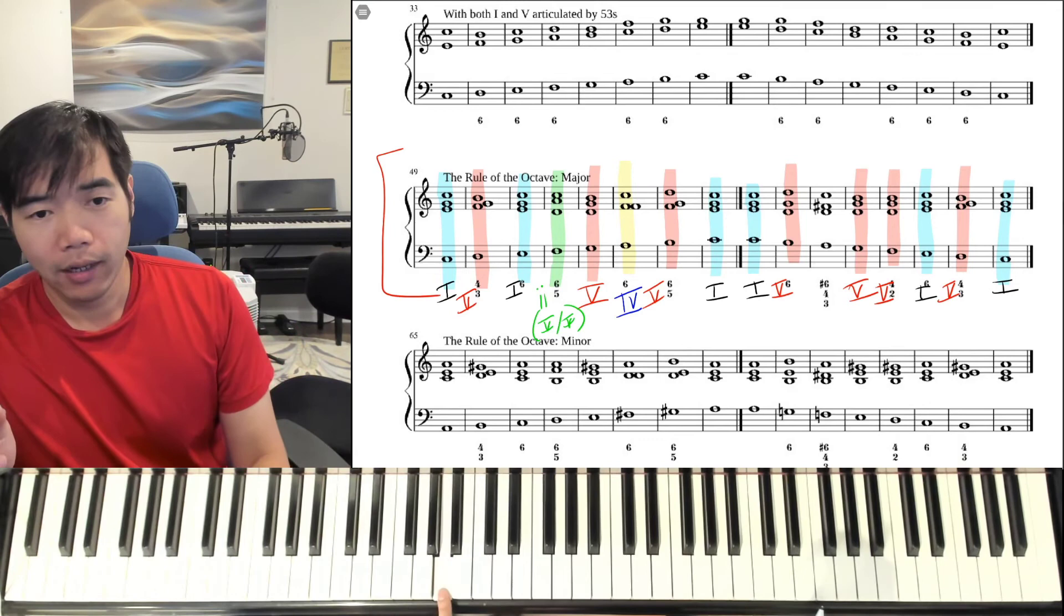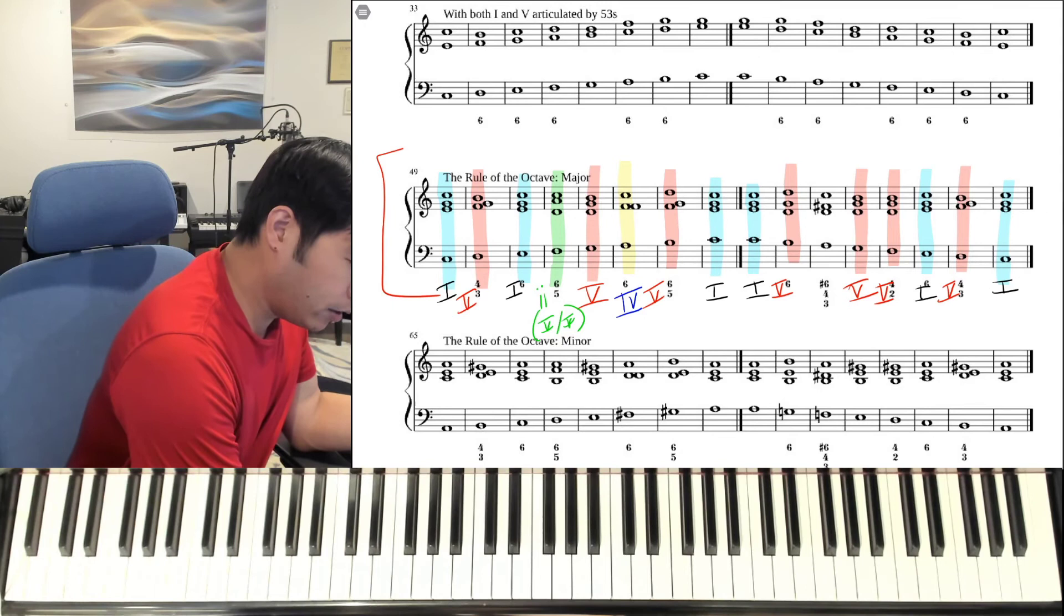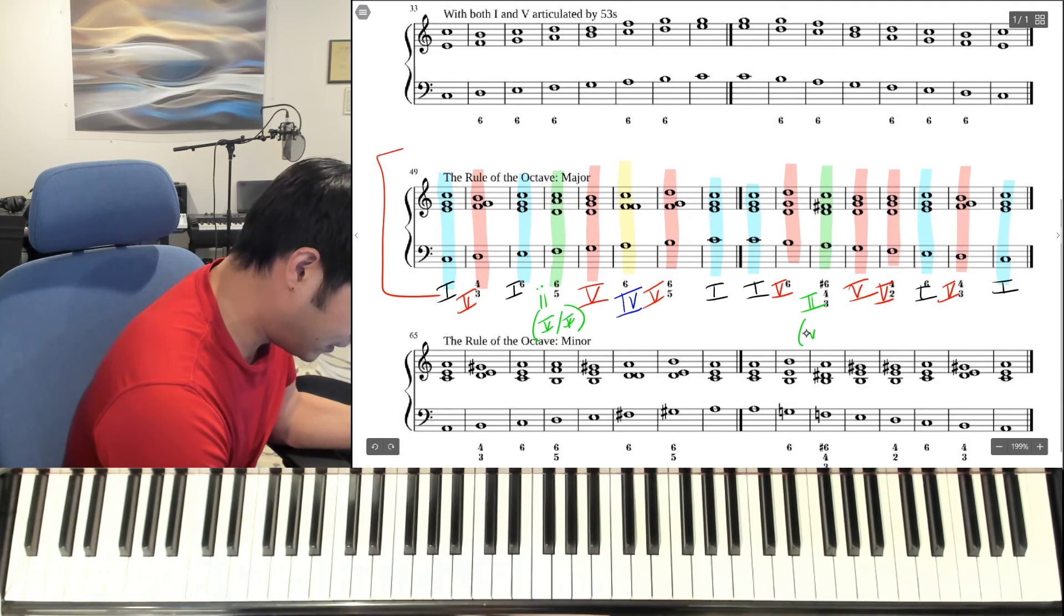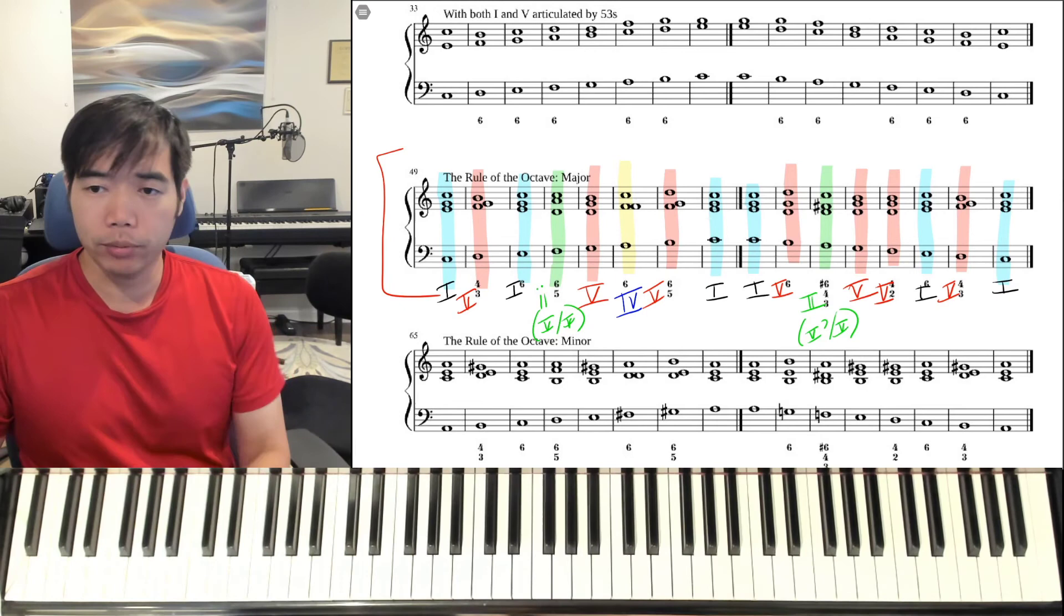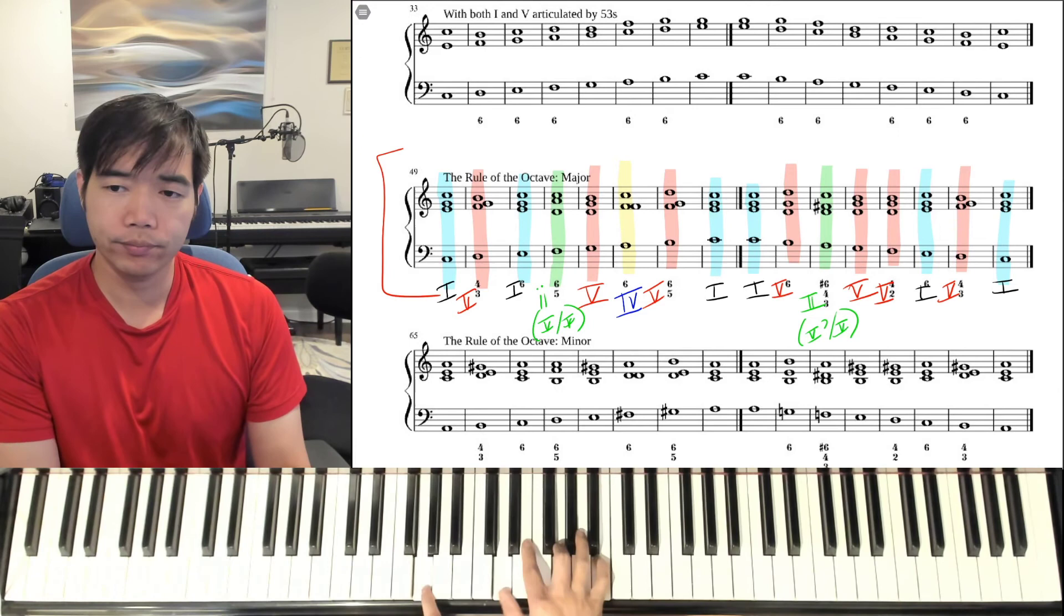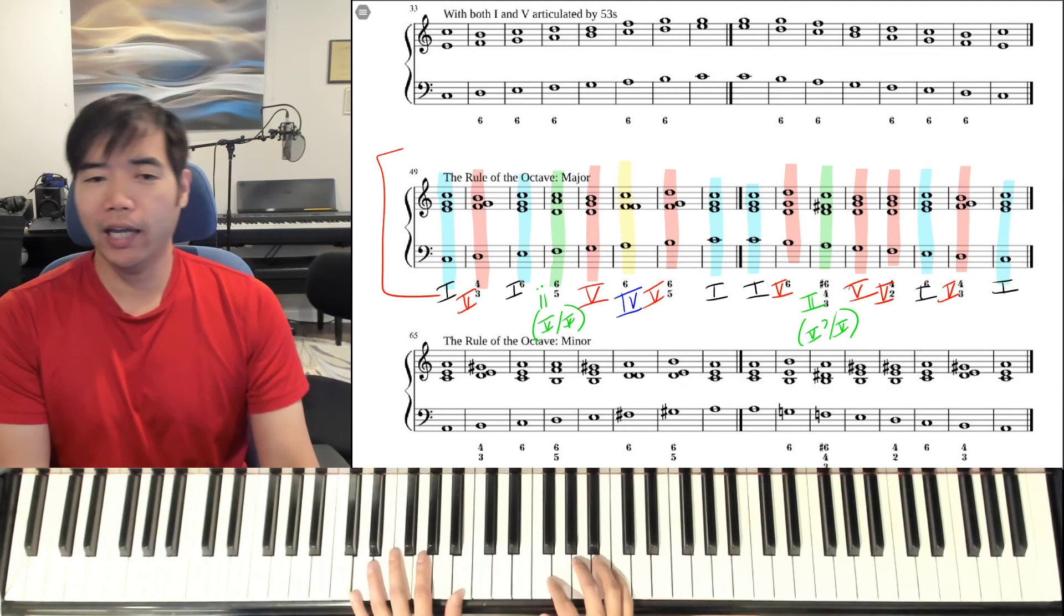So we can use the two chord again. But to get a little fancy, instead of using the diatonic version of the two, we're actually going to use a two seven, which is the five seven of five. By changing the third of the chord F natural to F sharp. There you have it. Why? Because F sharp as a leading tone, we want to resolve up to G. It gives you a stronger sense. And that is the rule of the octave in the major form.